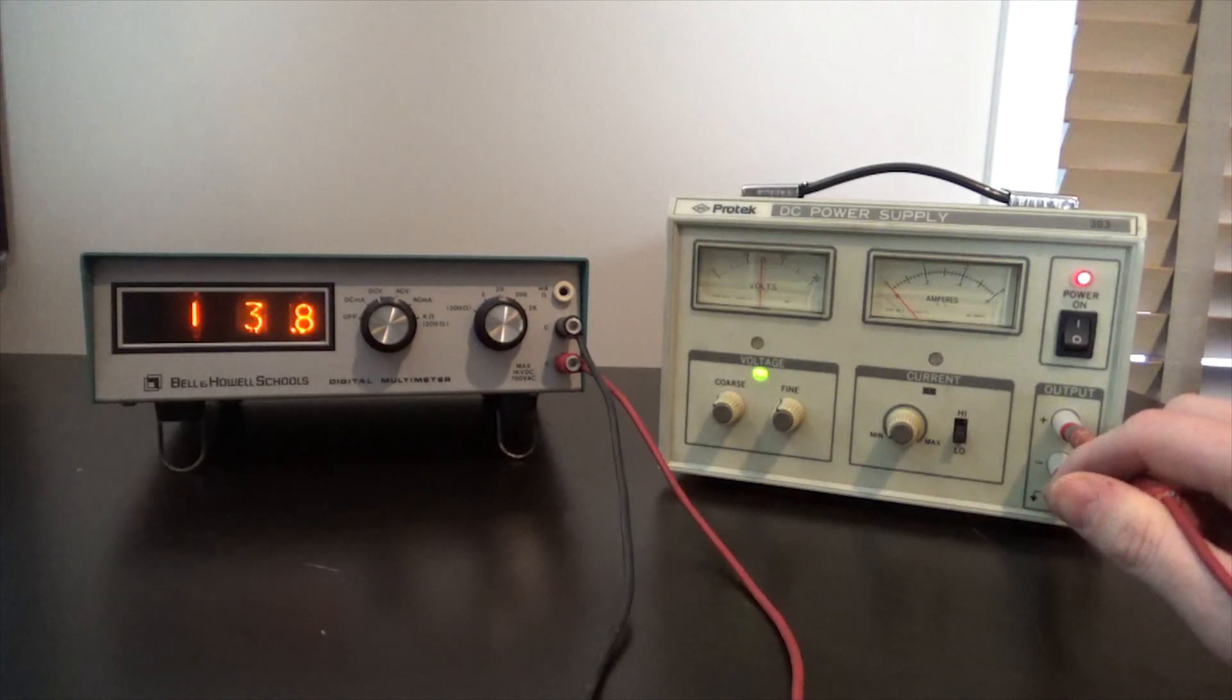The one on the far left, the number one, is just that. It's solely a number one. It'll only ever display one. But the two on the right are actual Nixie tubes that will change.